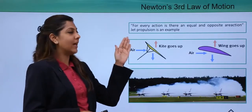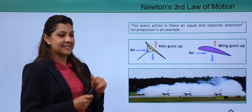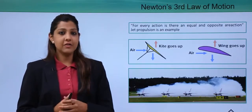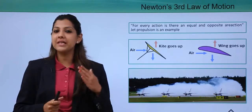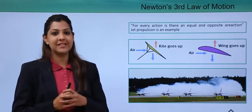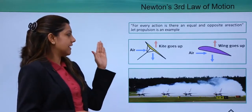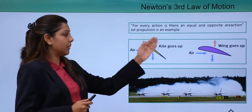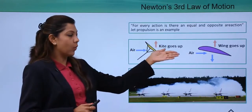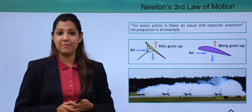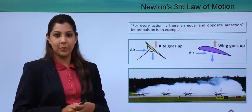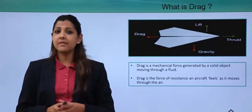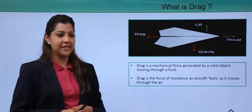Newton's third law: for every action there is an equal and opposite reaction. Jet propulsion is an example — jet planes are fast because their propeller blades create high-speed thrust. Just as air moving below a kite helps it lift up, when air goes beneath the wing of an aircraft it helps the aircraft lift itself up. That is Newton's third law in action.